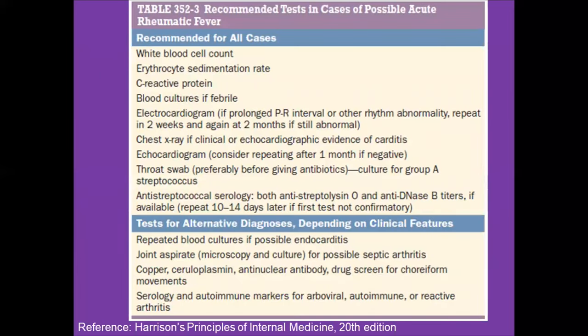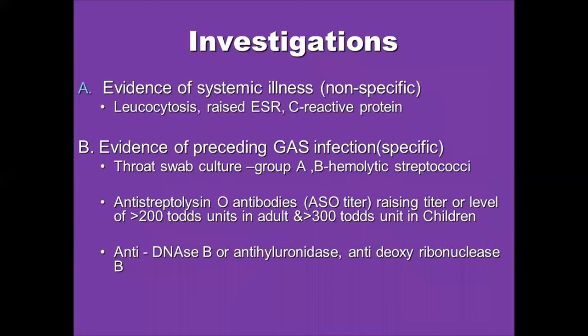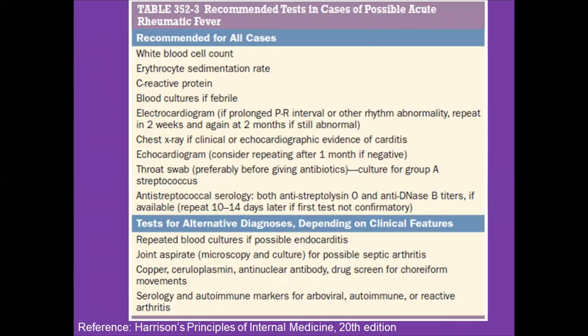Recommended tests in possible acute rheumatic fever should diagnose the condition and rule out other possibilities. Blood culture can rule out endocarditis; joint aspiration rules out other causes of arthritis; copper, anti-nuclear antibodies, and drug screen rule out choriform movements. Serology and autoimmune markers test for arbovirus infections and autoimmune conditions. Diagnostic tests include white blood cell count, ESR, CRP, blood culture, ECG, X-ray, and echocardiogram.